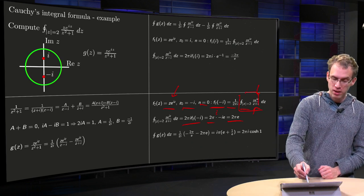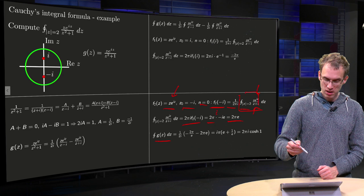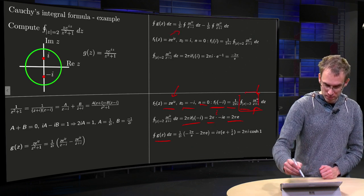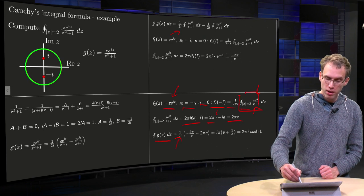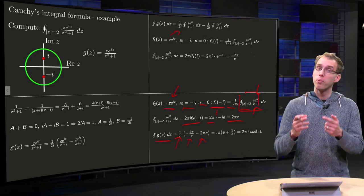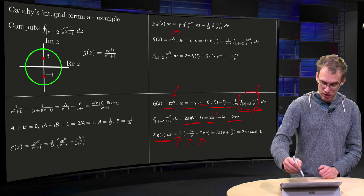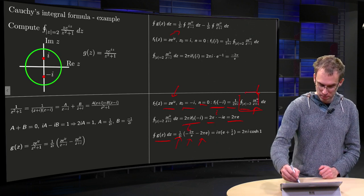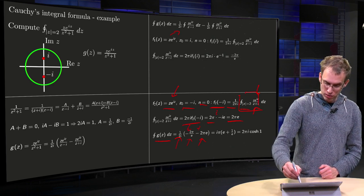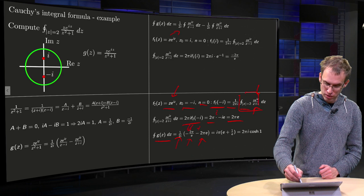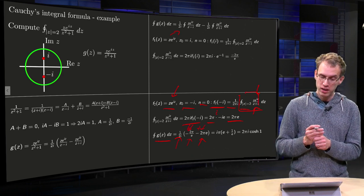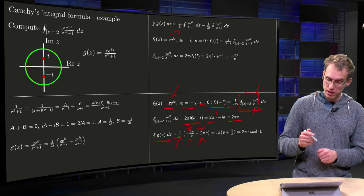So if you combine everything, integral of g(z)dz equals the 1 over 2i over here, and then the first integral minus the second integral. 1 over i equals minus i, which cancels out the minus signs over here, so it gives you i over 2. The factor of 1 half is cancelled out by the factor of 2 over there, so you get π over E plus π times E.